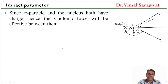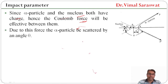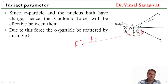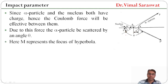Since both the alpha particle and nucleus have charge, the Coulomb force will be effective between them. Both are positively charged, so the Coulomb force F = K·q1·q2 / r² is effective. Due to this force, the alpha particle will be scattered by an angle theta. M represents the focus of the hyperbola.